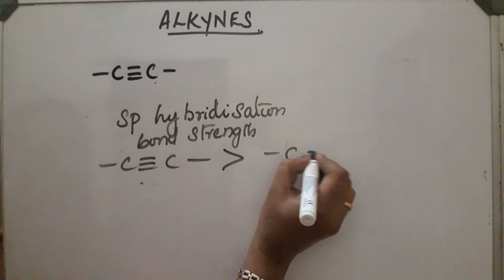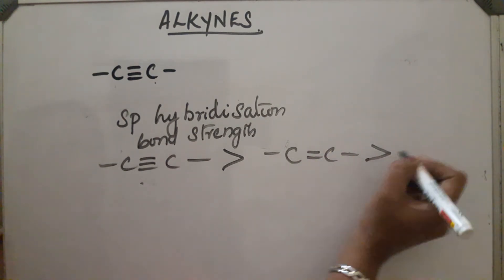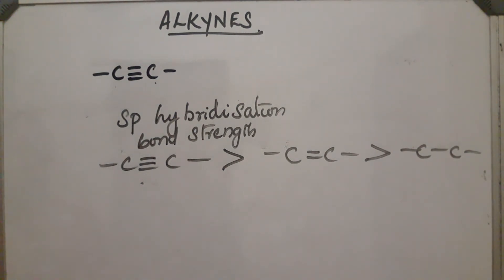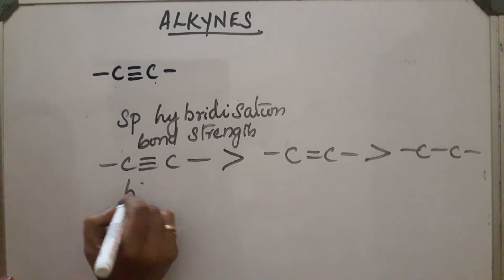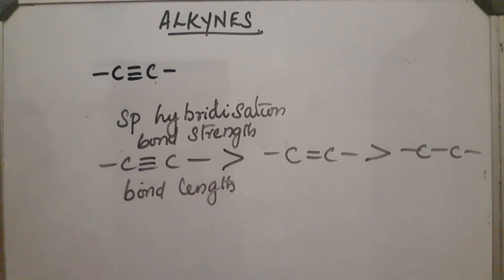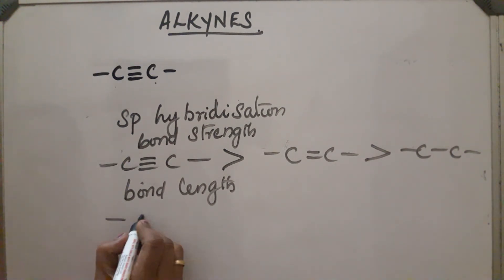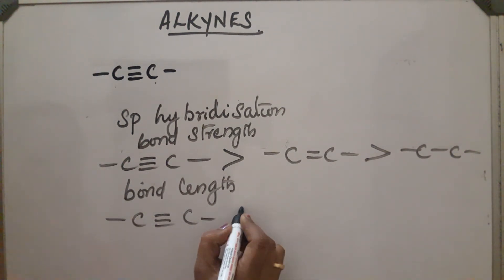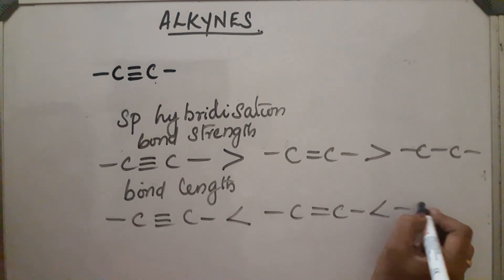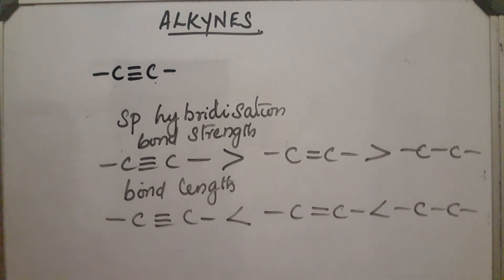The bond length is in the reverse order. C triple bond C is the shortest bond, shorter than C double bond C, which is shorter than C single bond C. So C triple bond C has the shortest bond length compared to the other two.